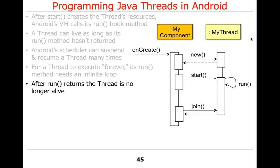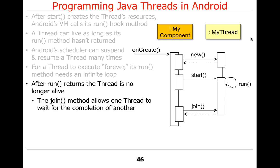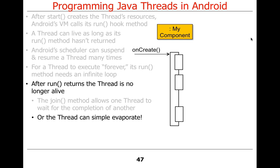A thread is no longer considered alive after run returns. The join method, called from another thread, can be used to synchronize on the completion of the thread you're joining with — that's one common way of knowing when something's done. When we talk about countdown latches or cyclic barriers, you'll see other techniques. Or the thread can just disappear with no one waiting for it.